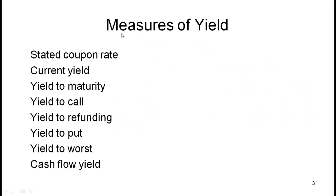Now let's talk about different measures of yield. Over here we are simply listing the measures, and over the next few slides we will talk about these in detail. The stated coupon rate is obvious — in my earlier example the stated coupon rate was 10%. If you can just pause here for a minute and read through these, then we will discuss them over the next few slides.